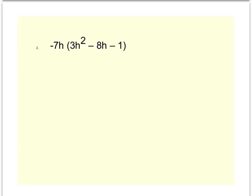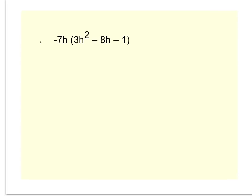This second example, I'm going to be multiplying this negative 7h with everything inside my parentheses, so I'm going to have to do the distributive property three times, and let's see what happens.